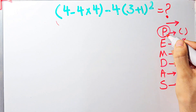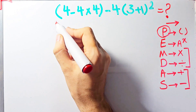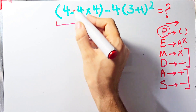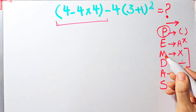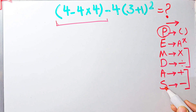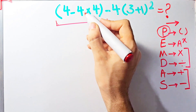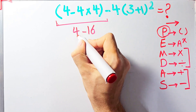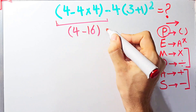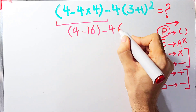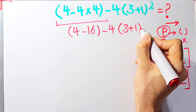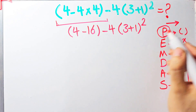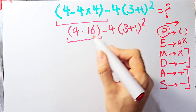Inside the first parenthesis we have subtraction and multiplication. We simplify the multiplication first because it has higher priority than subtraction. Negative four times four equals negative sixteen. Now we have four minus sixteen, which equals negative twelve. The expression becomes: negative twelve, minus four, times open parenthesis three plus one close parenthesis, to the power of two.